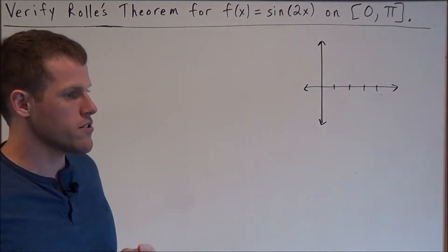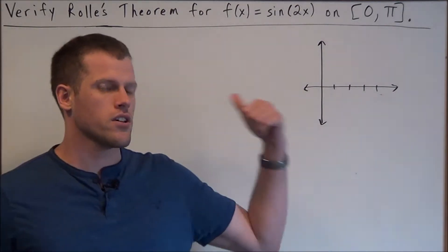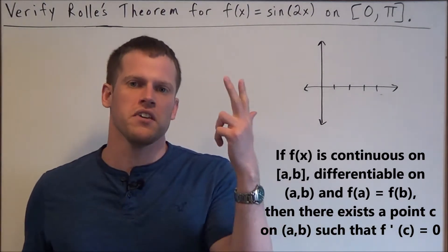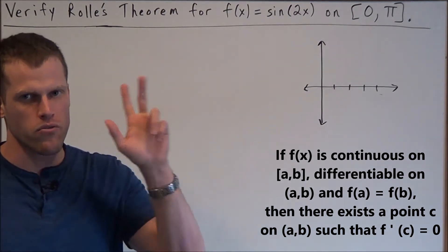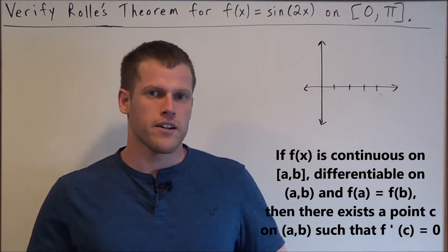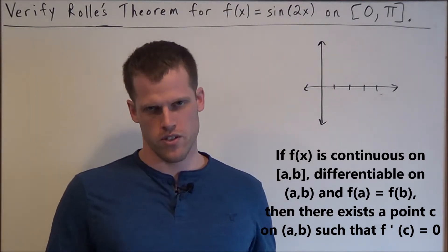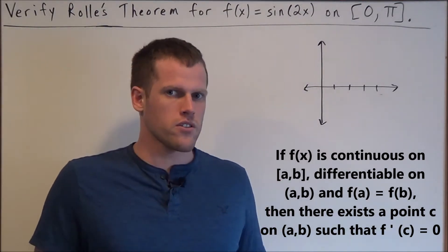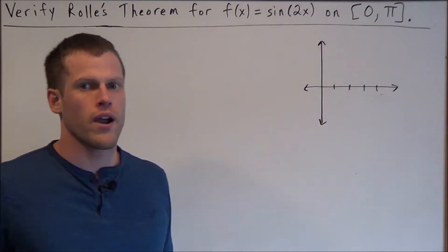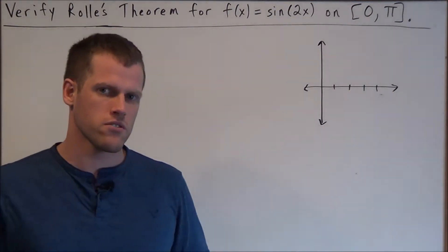For Rolle's theorem we need to show three conditions are true: the function must be continuous on a closed interval, differentiable on the open interval, and equal at its endpoints. If these three conditions are met, that guarantees we can find a point where the derivative is equal to 0. My best piece of advice is to practice drawing the theorems out, so we're going to sketch Rolle's theorem.